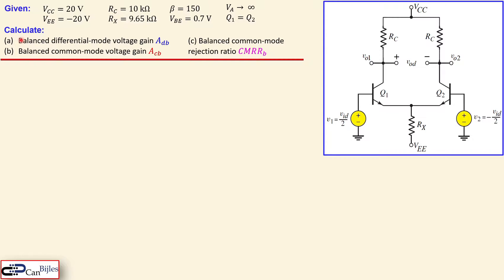We would like to calculate in this case the balanced differential mode voltage gain, the balanced common mode voltage gain. In addition, we would also like to know what the common mode rejection ratio is, which is given by this expression for the balanced case. Once we know A and B, question C will be straightforward. Let's look at our solutions.